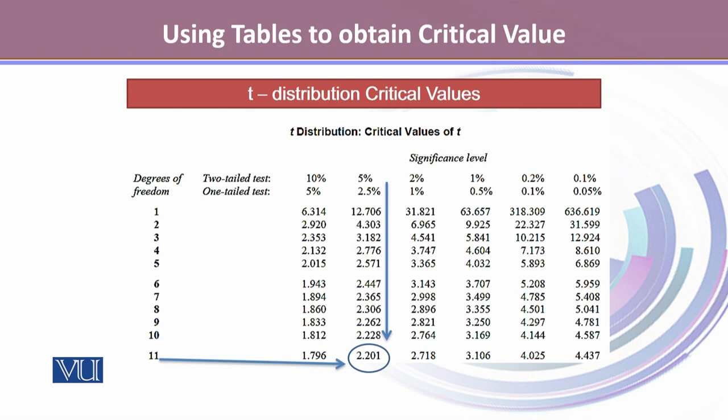We look for the degrees of freedom and then our desired significance level. If for a two-tailed test our significance level is 5% and our degrees of freedom is 11,